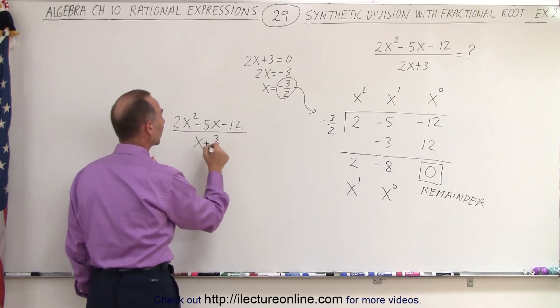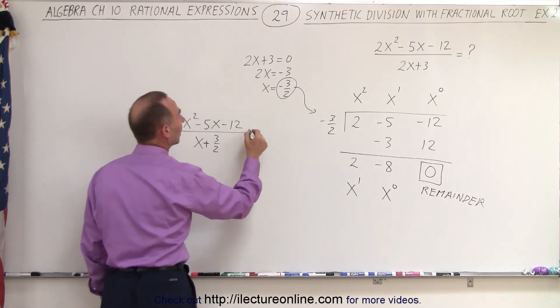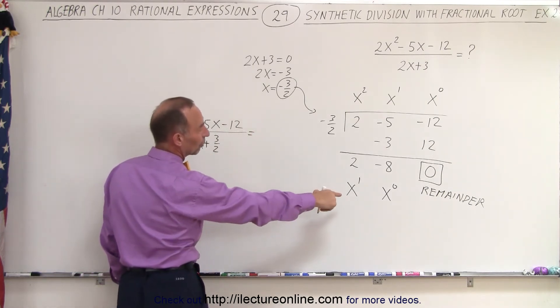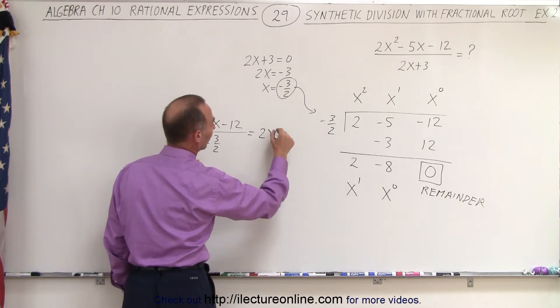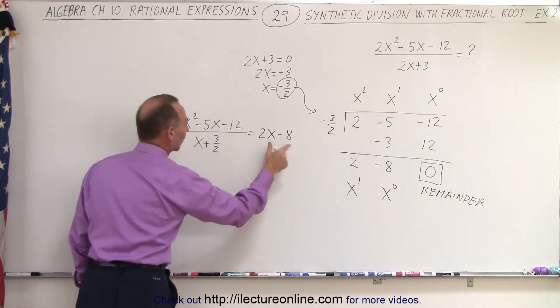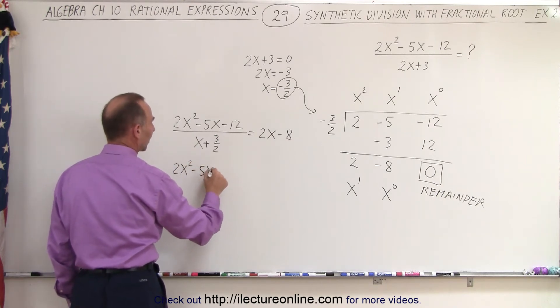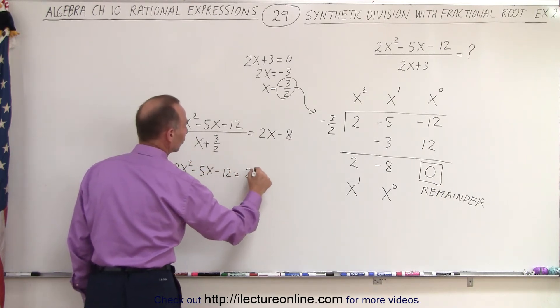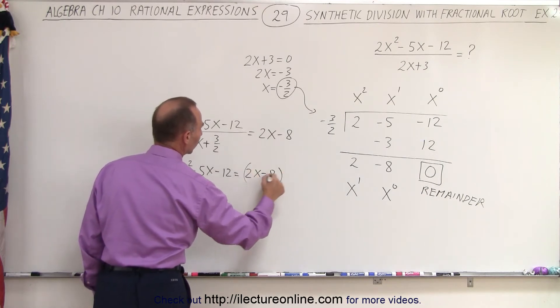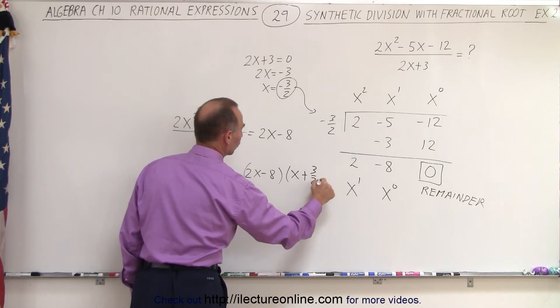Actually, it's x plus 3 over 2 because that's the root, so we need to use the x plus 3 over 2. That is going to be equal to what we have here, which is 2x minus 8, which is the solution we got. Now when we cross multiply, we get 2x squared minus 5x minus 12 is equal to 2x minus 8 multiplied times x plus 3 over 2.